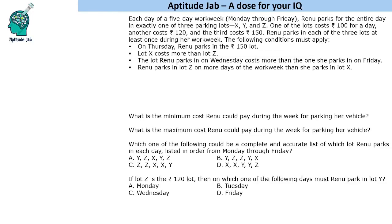Hello everyone, welcome to Aptitude Jab. This is a caselet. It says that each day of a 5-day work week, Monday to Friday, Renu parks for the entire day in exactly one of the 3 parking lots X, Y, Z. One of these costs Rs. 100, the second costs Rs. 120, and the third costs Rs. 150. She parks in each of the 3 lots at least once during her work week.